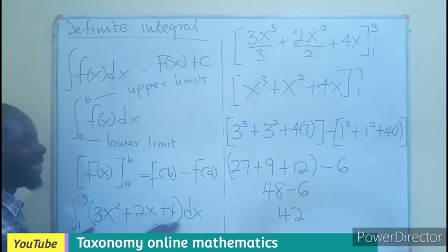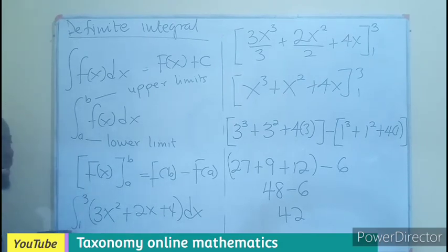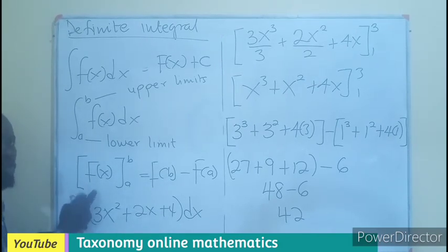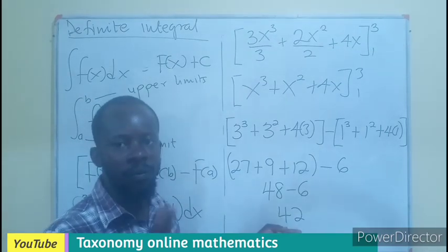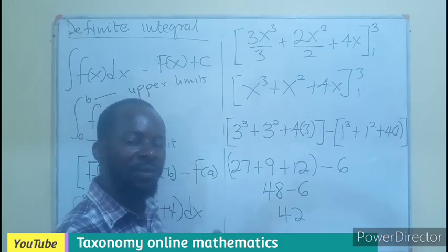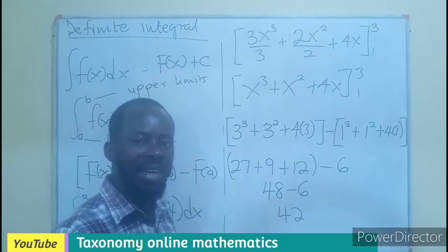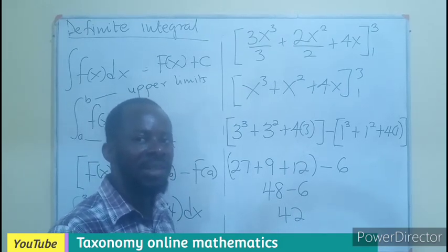If you are to integrate this function from the limit of 1 to 3, you should be able to get exact value as 42. So, this gives the difference between definite integral and indefinite integral.